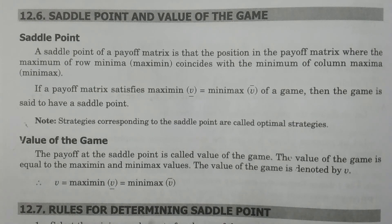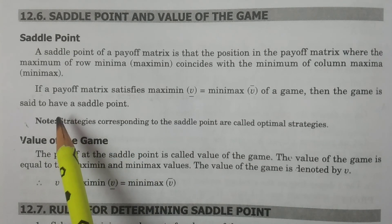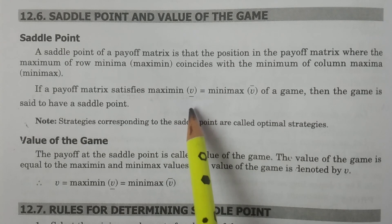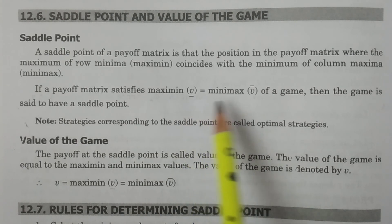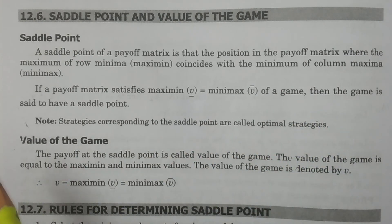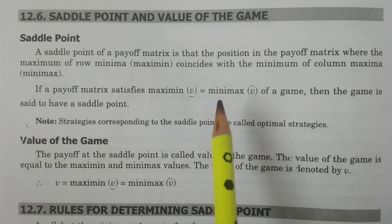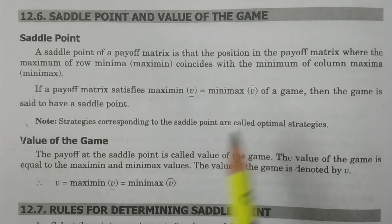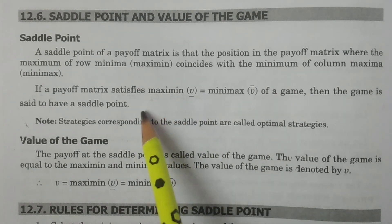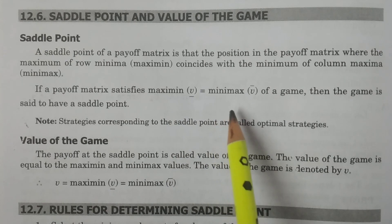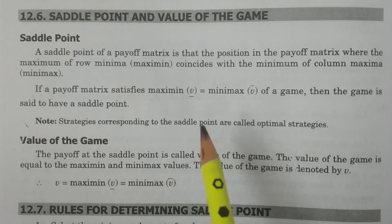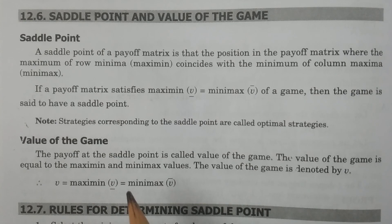More formally, if a payoff matrix satisfies maximin (denoted by mu underscore) equal to minimax (mu upper score) of the game, then the game is said to have a saddle point. The saddle point exists when the minimax and maximin values of the game are equal at one particular position of the payoff matrix.